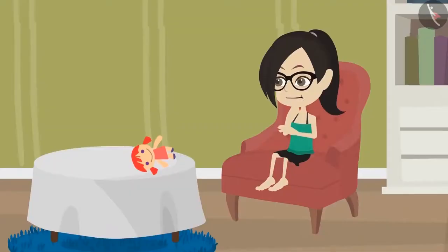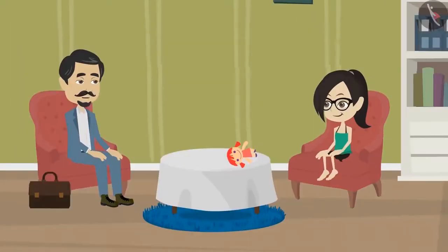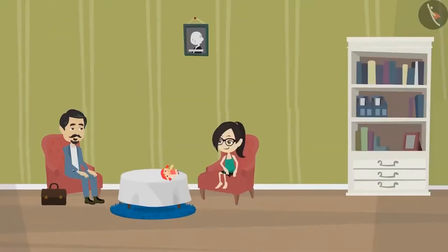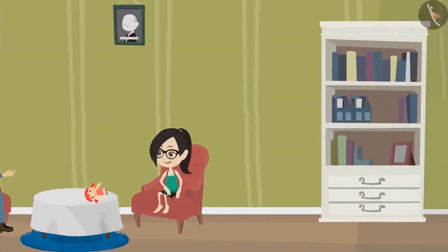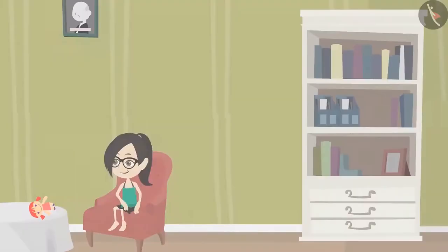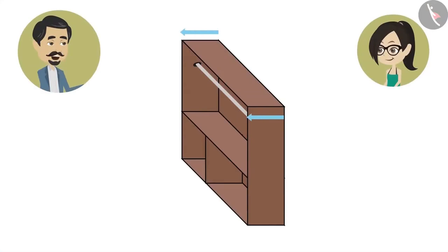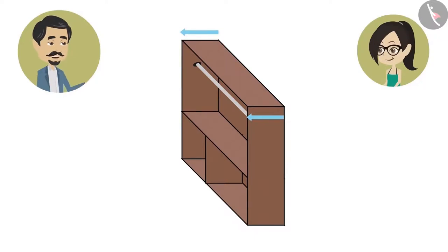What are the objects in our house whose depth can be measured? There are many objects in our house whose depth can be measured. Look at that cupboard. The depth of a cupboard is a very useful measurement because the more the depth of a cupboard, there will be more space for storage.